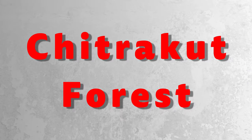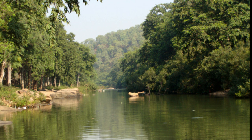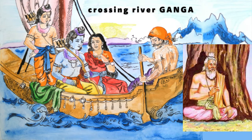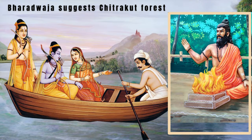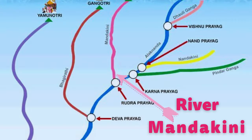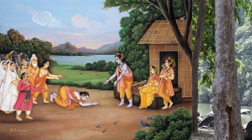Chitrakut Forest: Rama, Lakshmana, and Sita cross the river Ganga in the boat of Guha. They meet Rishi Bharadwaja, who advises Rama to go to Chitrakut forest. Chitrakut forest is located near the banks of the Mandakini river, and it served as the place where Lord Rama, Sita, and Lakshmana resided during their exile.